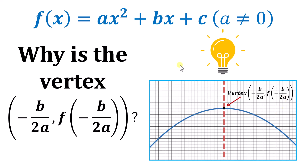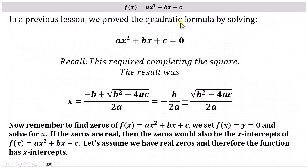To begin, let's consider the quadratic formula. In a previous lesson, we proved the quadratic formula by solving the corresponding quadratic equation in the form ax² + bx + c = 0. This process required completing the square, and the result was the quadratic formula: x = (-b ± √(b² - 4ac)) / 2a.